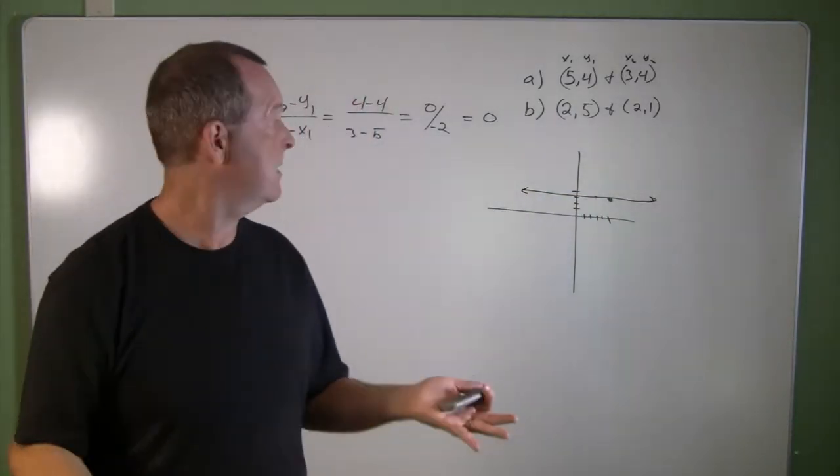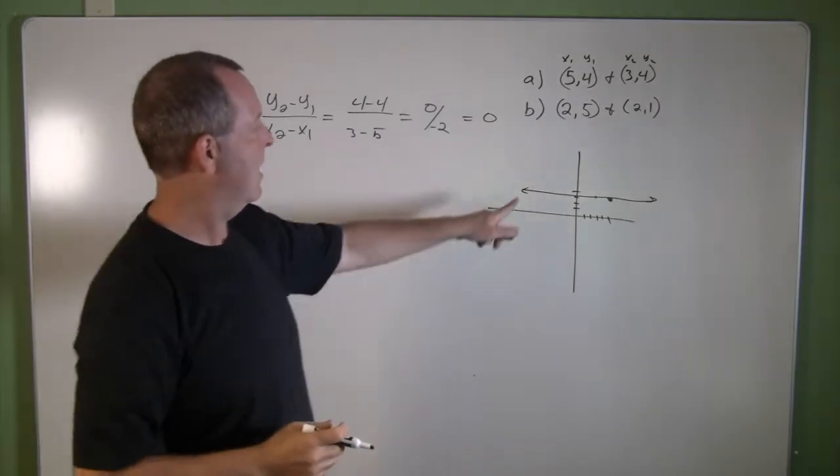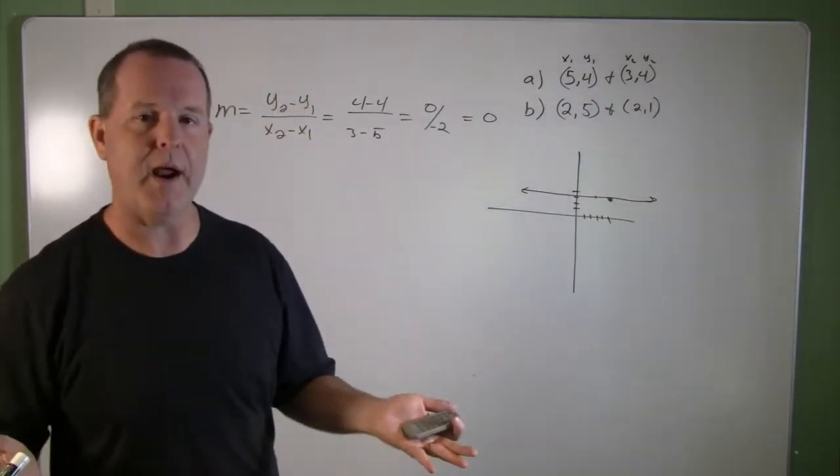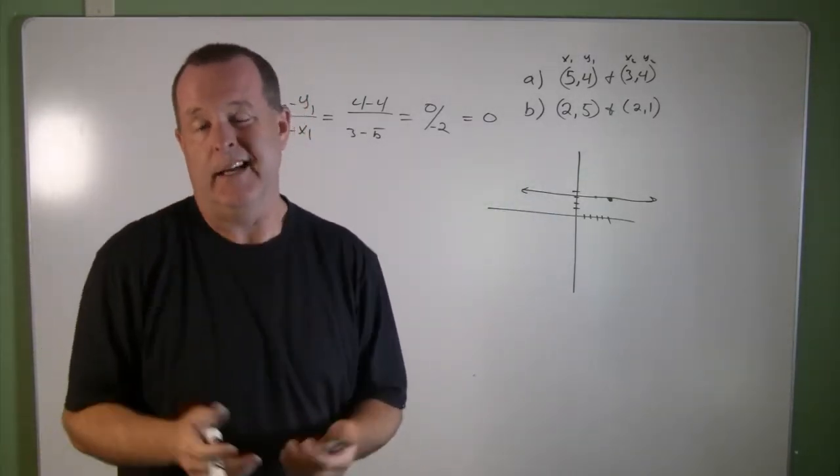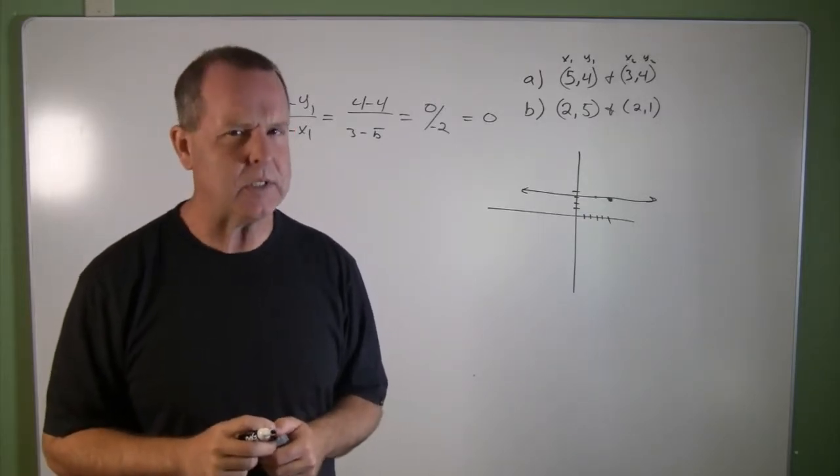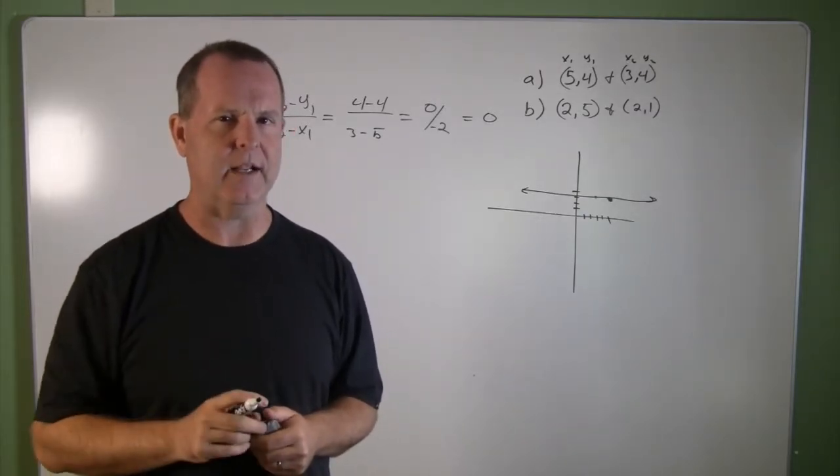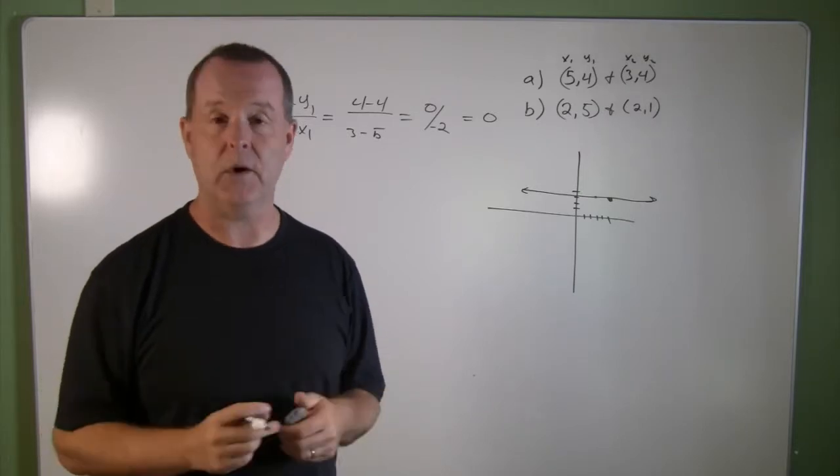But basically it told me is that I have a horizontal line. A line that goes from left to right but that doesn't rise. It has 0 slope. Not necessarily no slope. That's a little bit of a tricky concept. It has 0 slope.